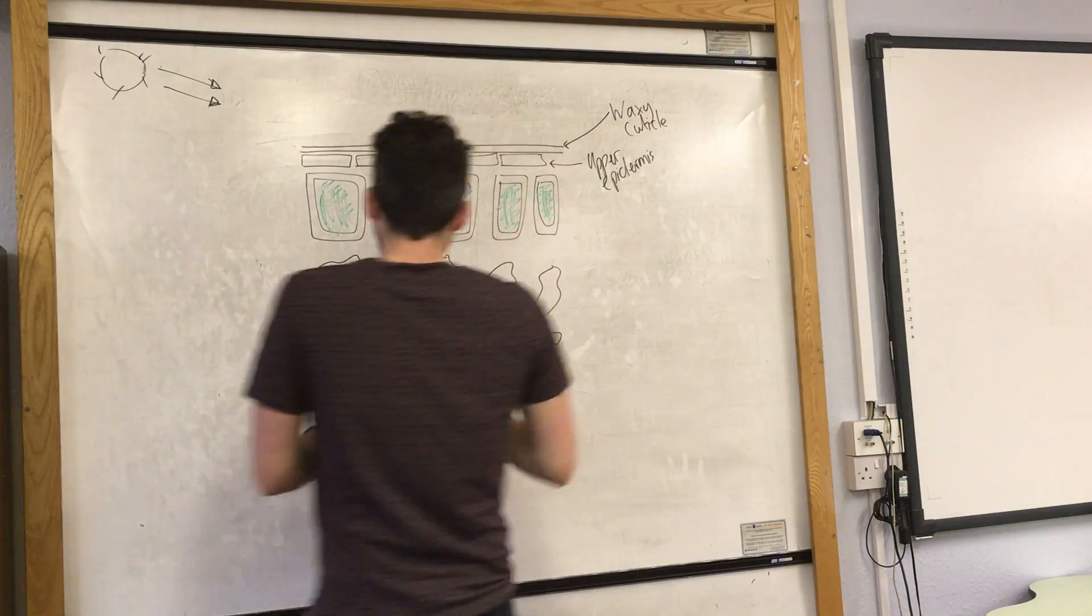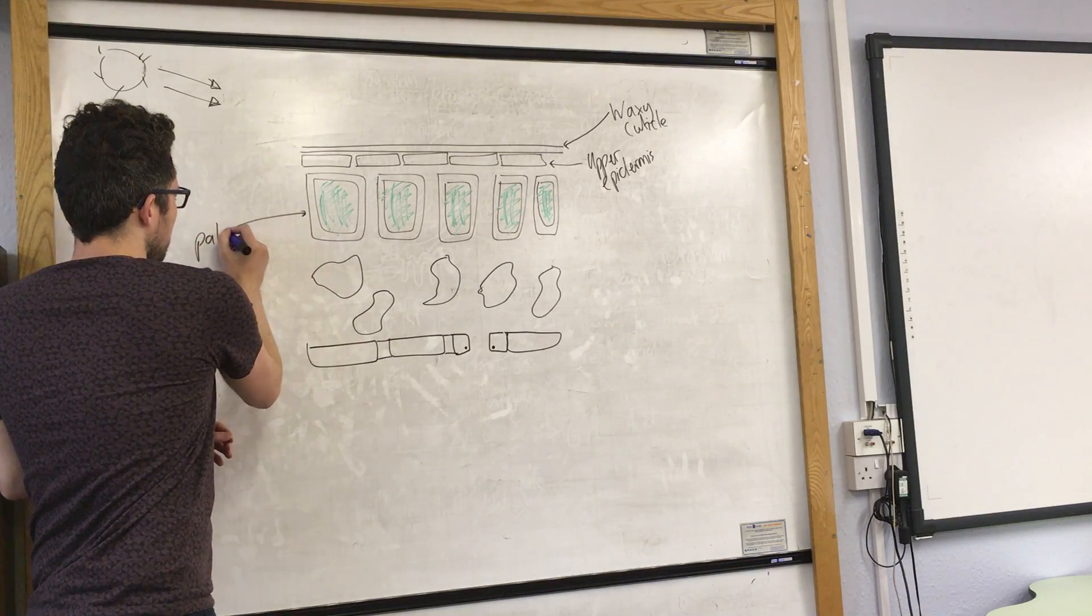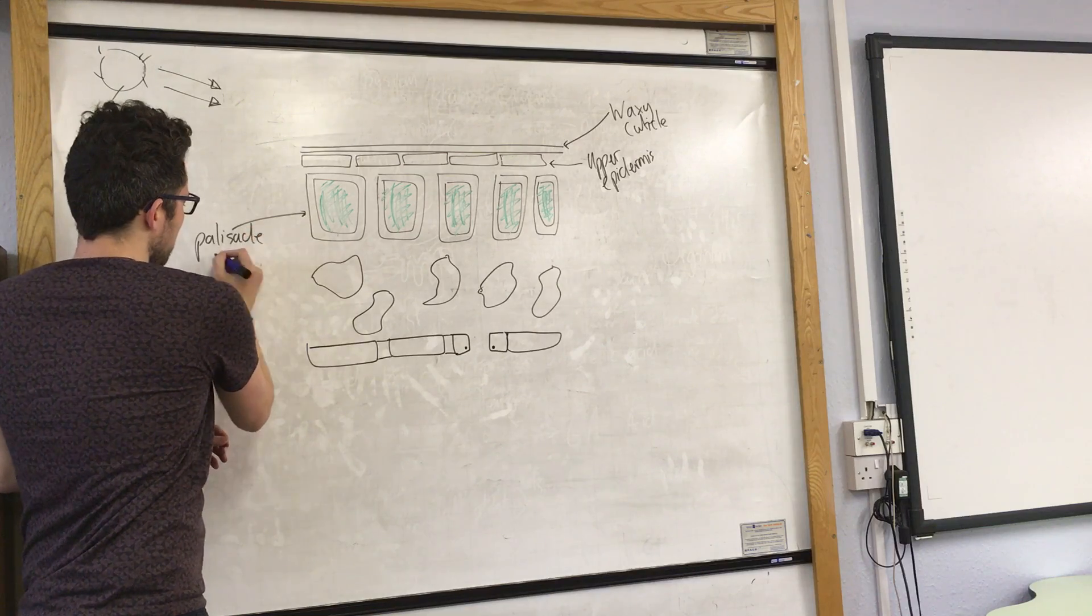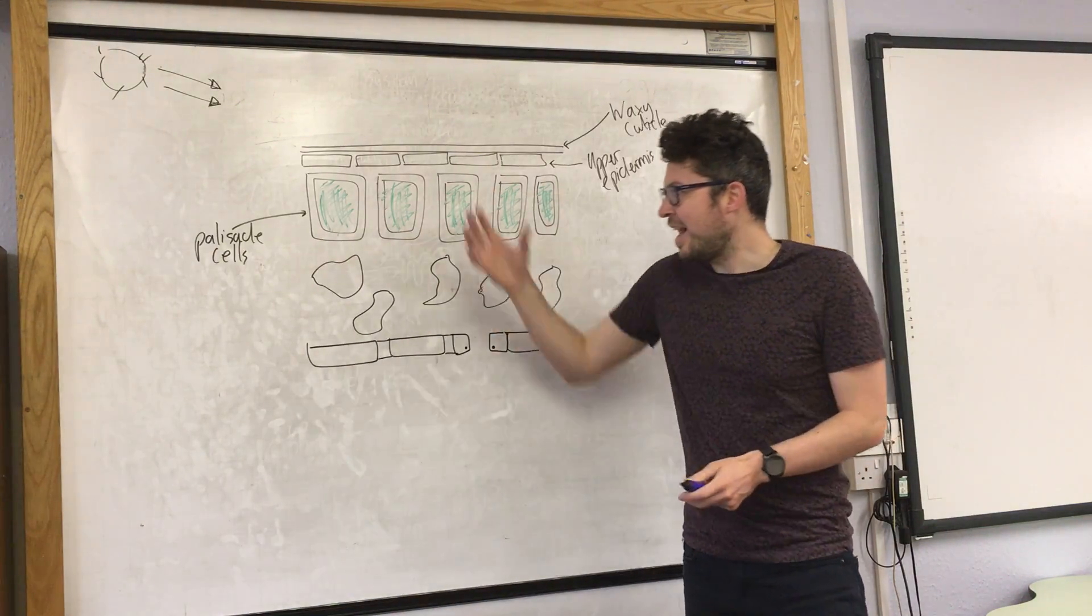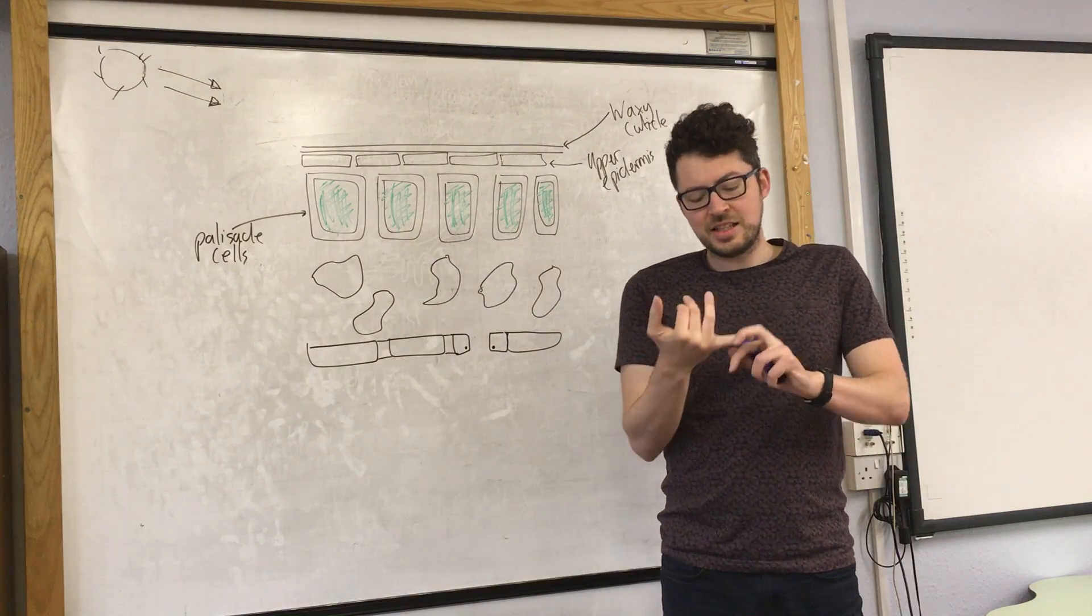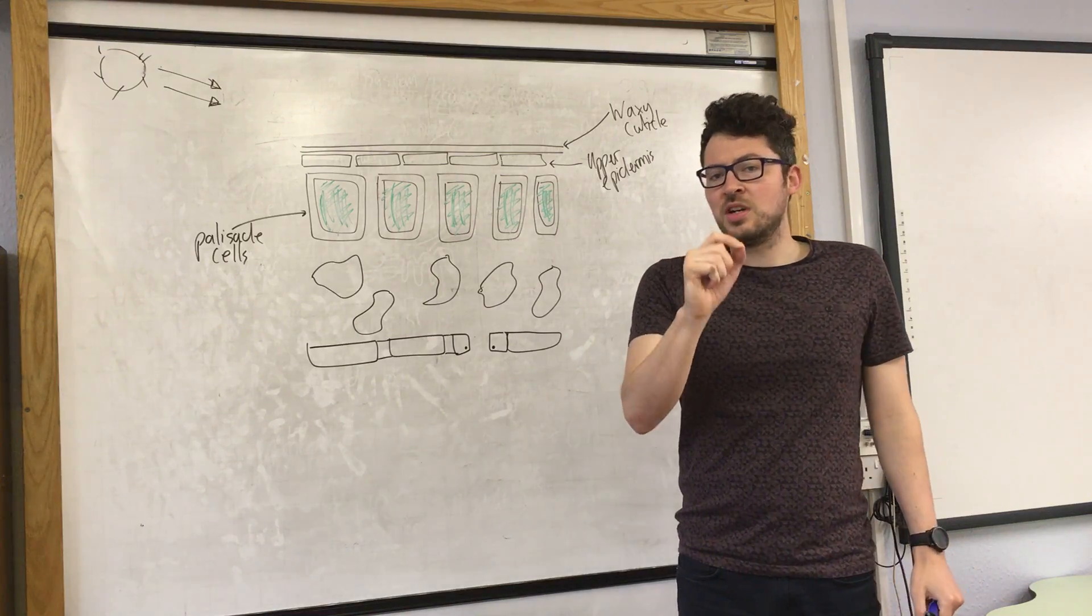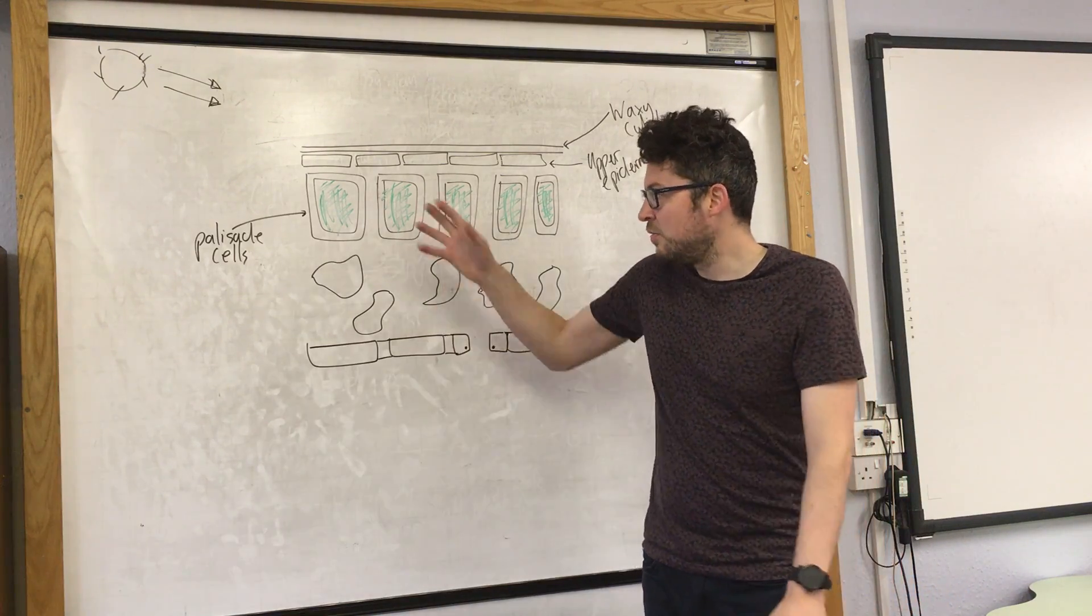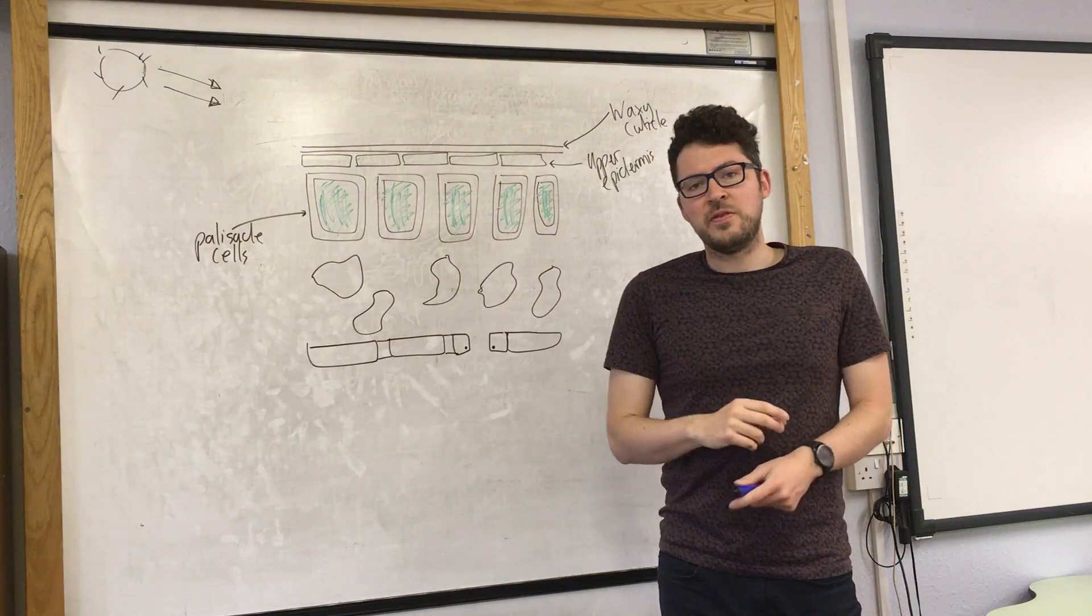This next layer is the palisade cells. The reason I've colored them green is because they contain many chloroplasts, which contains chlorophyll. That's what absorbs sunlight to provide energy for photosynthesis. This layer absorbs light for photosynthesis.